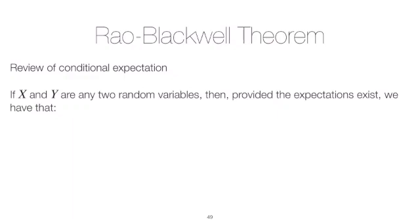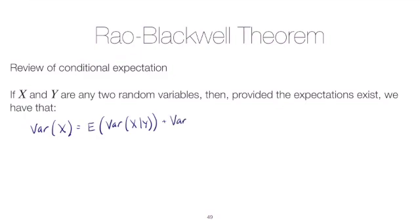In a previous video, we looked at the law of total expectation, and there's a similar result for variances called the law of total variance. Starting with x and y, two random variables, we can show the following, provided that these expectations exist: the variance of x equals the expected value of the variance of x given y, plus the variance of the expectation of x given y.